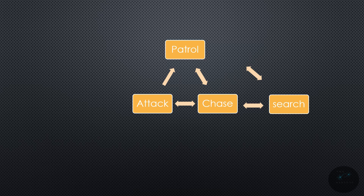So, now we have four finite states our AI can be in. Well, what happens if the enemy is scary and they know they can't beat it? It's a massive monster and they're armed with a water gun.